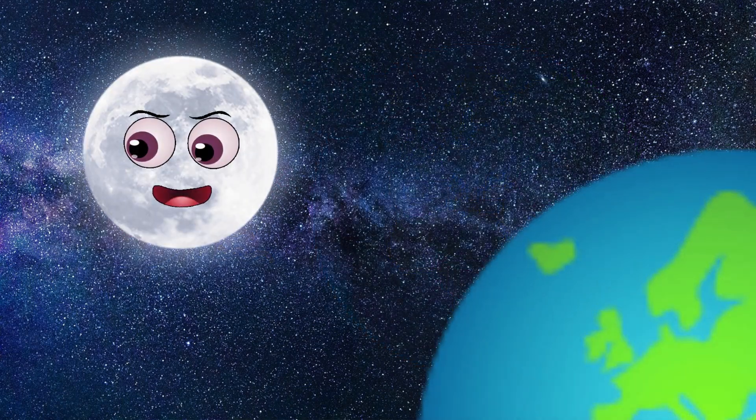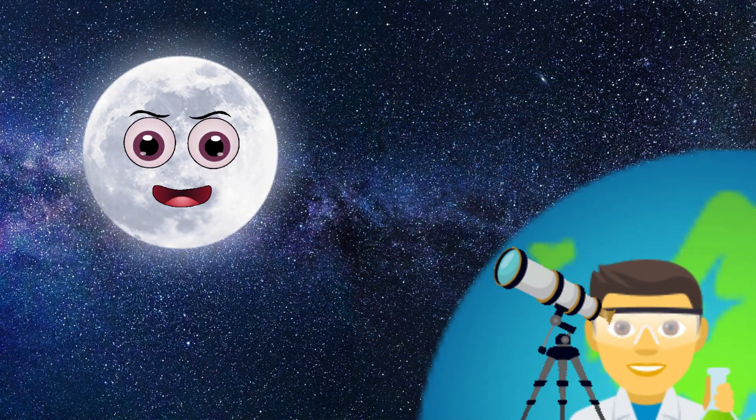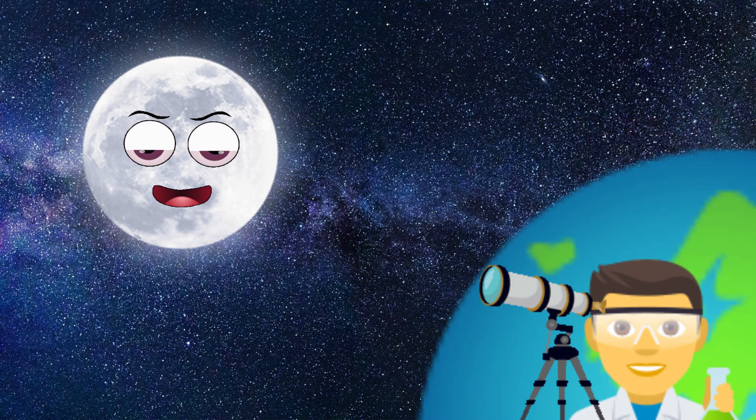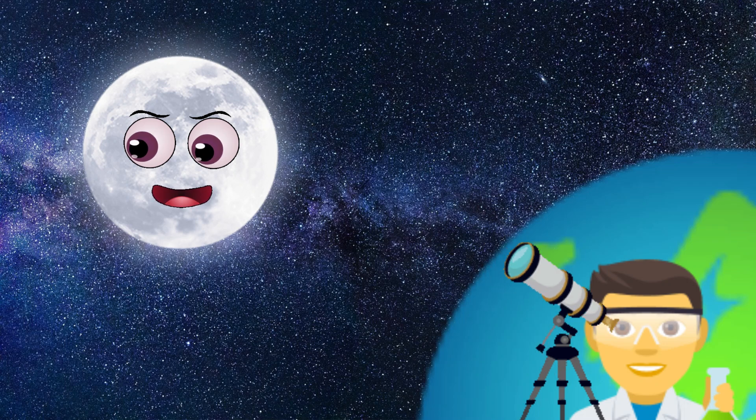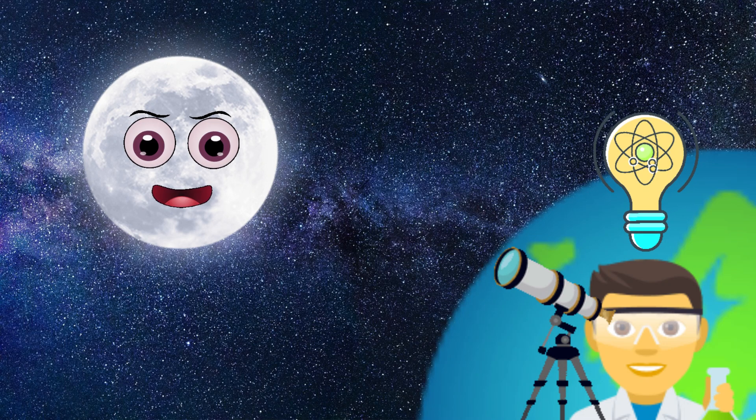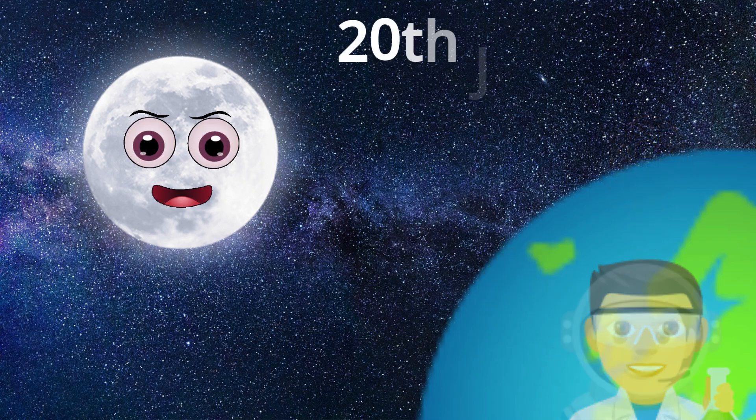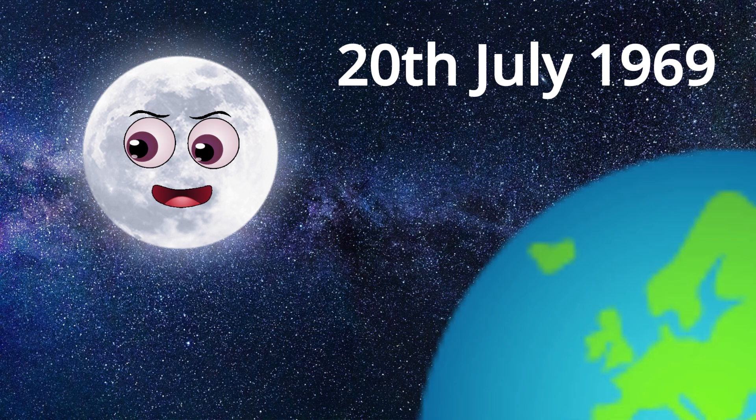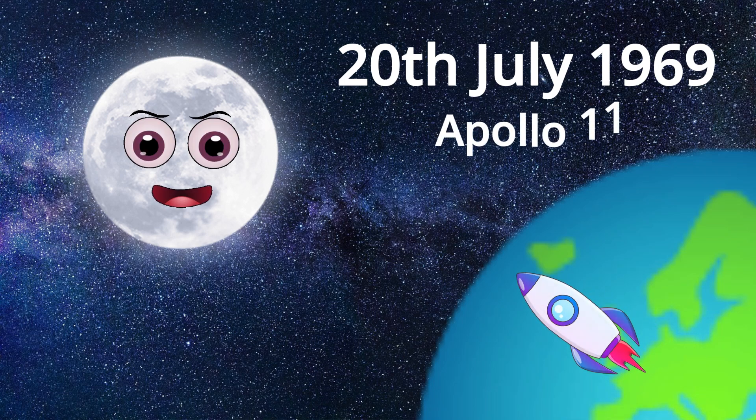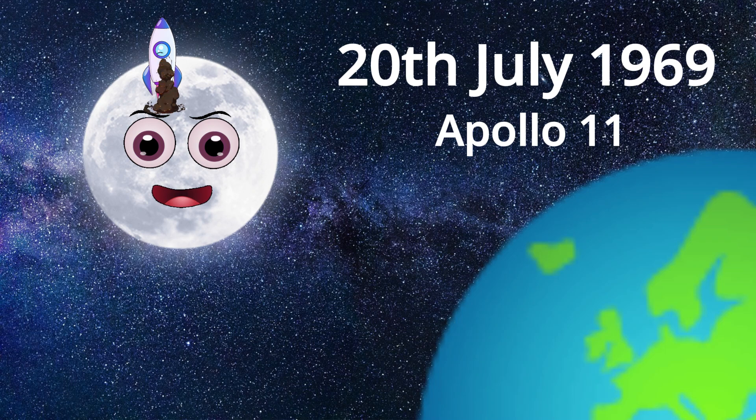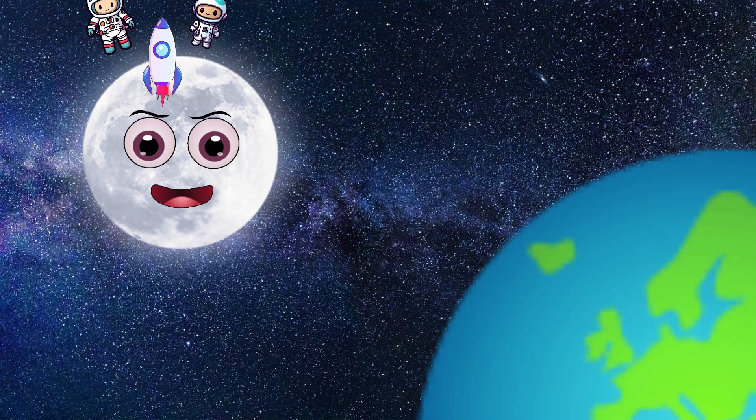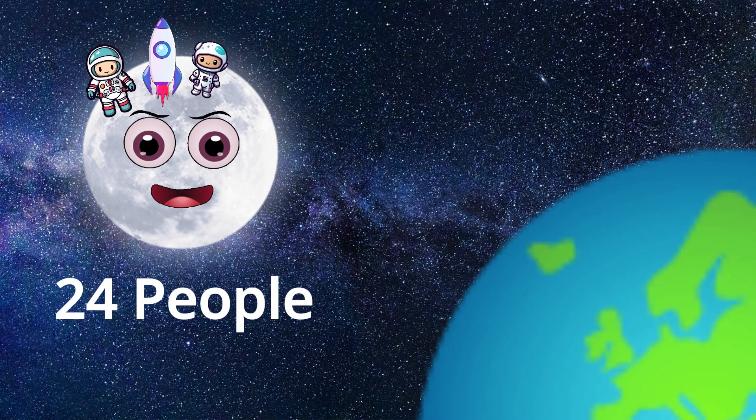Our moon has been observed for thousands of years, and even formed the early basis of calendars. In the past, the only way we could study the moon was by observing it from Earth. However, on the 20th of July 1969, the American spaceflight mission Apollo 11 made its first trip to the moon, and it is the only celestial body we've ever visited as humans. In total, 24 humans have visited the moon.